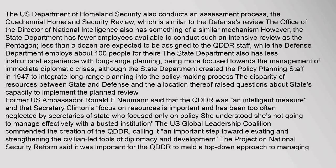The U.S. Department of Homeland Security also conducts an assessment process, the Quadrennial Homeland Security Review, which is similar to the Defense's Review. The Office of the Director of National Intelligence also has a similar mechanism. However, the State Department has fewer employees available to conduct such an intensive review as the Pentagon — less than a dozen are expected to be assigned to the QDDR staff, while the Defense Department employs about 100 people for theirs. The State Department also has less institutional experience with long-range planning, being more focused towards the management of immediate diplomatic crises, although the State Department created the policy planning staff in 1947 to integrate long-range planning into the policy-making process. The disparity of resources between State and Defense raised questions about State's capacity to implement the planned review.